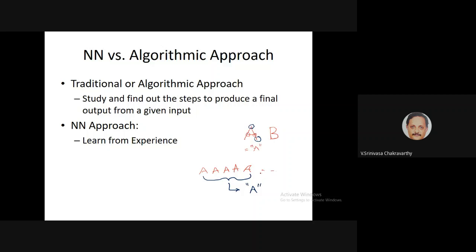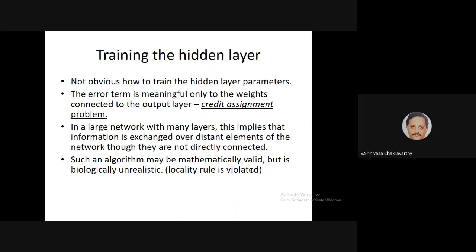The network generalizes from those examples so that if you later give a different instance of A, it will recognize it as the same symbol. This is also kind of how people learn — if you're teaching a child to read alphabets, you show the letter A several times and ask the child to say 'A', and the child slowly recognizes what they all have in common. But how do you derive the learning rule for an MLP? That's what slowed down research for a long time.